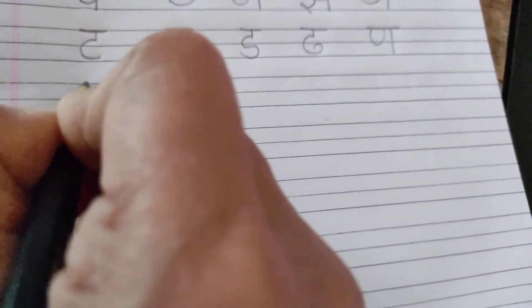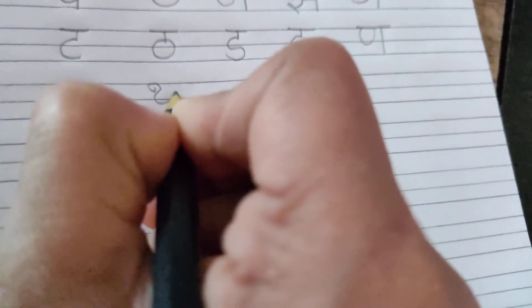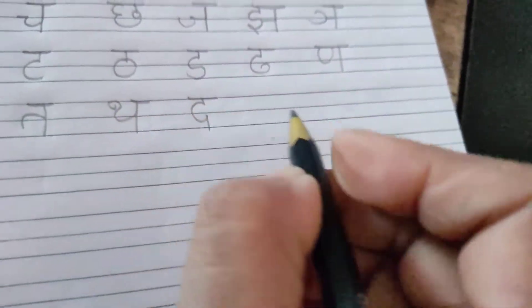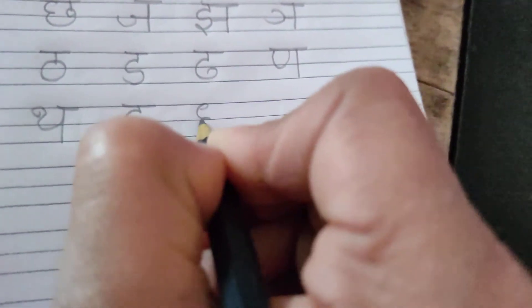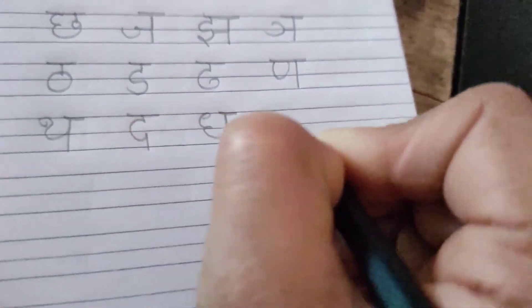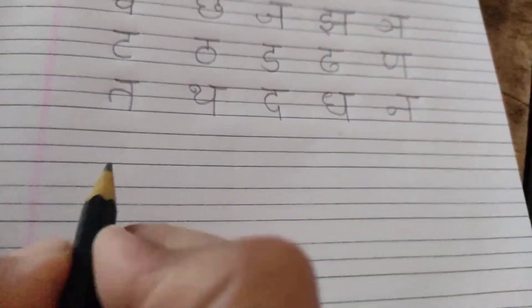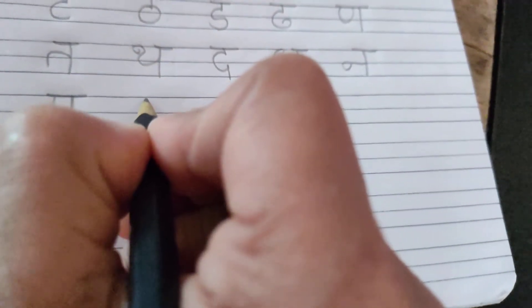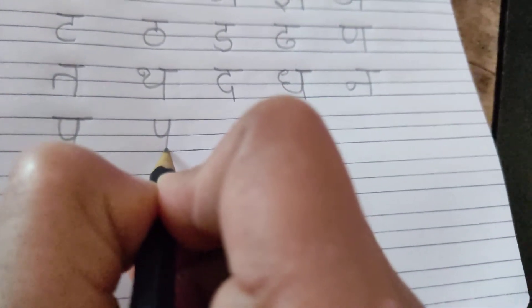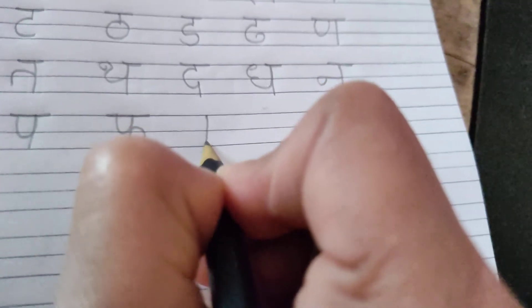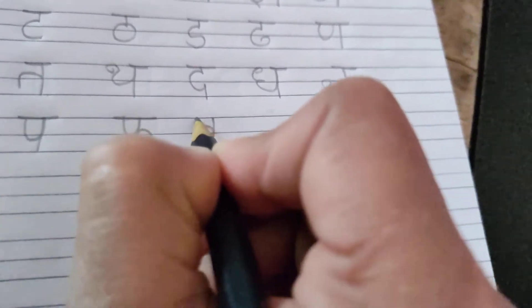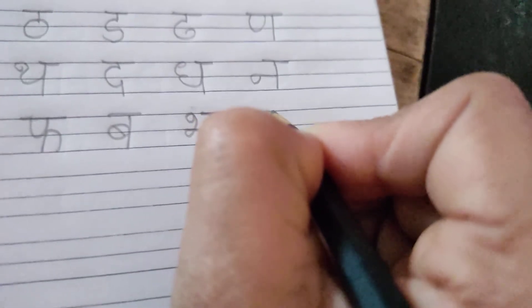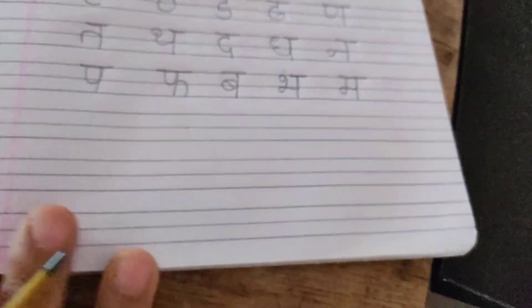Next TA. TA say TARAZU. TA say THARMAS. DA say DAVAT. DA say DANASU. NA say NAL. Next PA. PA say PATAN. PA say FAL. BA say BAKARI. BA say BHAVAN. MA say MAGAR. Finish no?